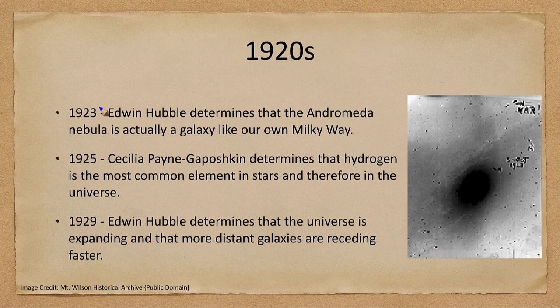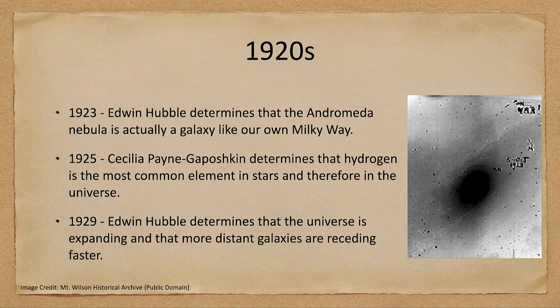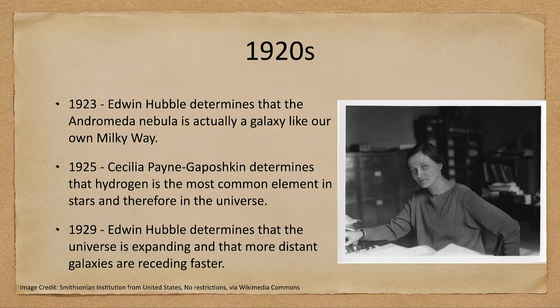Let's start off in 1923, which as this is recorded is about a hundred years ago. That's when Edwin Hubble made observations of the Andromeda galaxy and found Cepheid variable stars in it, which he could use to determine the distance. That allowed him to determine that it is a galaxy like our own Milky Way. A couple of years later, Cecilia Payne-Gaposchkin did calculations to determine that hydrogen is the most common element in stars and therefore in the universe.